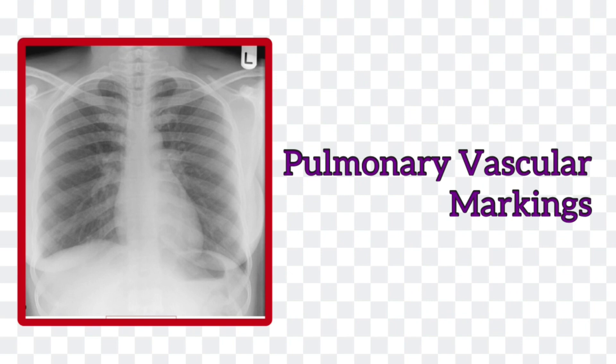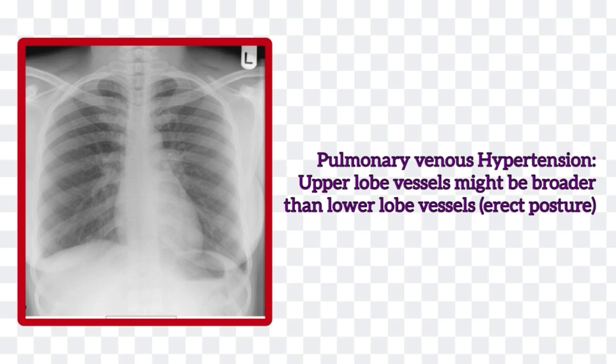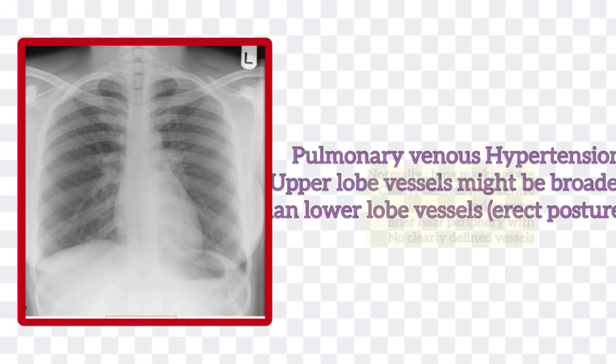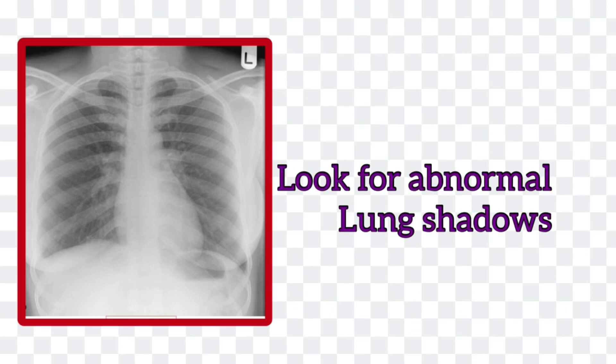Now look at the pulmonary vascular pattern. Normally, arteries and veins branch vertically to the upper and lower lobes. The upper lobe vessels have a smaller diameter than the lower lobe vessels in an erect chest x-ray — this is due to gravity. In pulmonary venous hypertension, vessels branching upwards become larger than those branching downwards. In a normal chest x-ray, lung markings are more clearly defined near the center and become smaller and more difficult to see towards the periphery. Look for any discrete or generalized shadows in the lung fields.